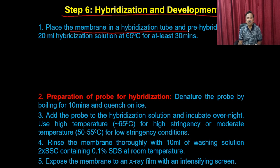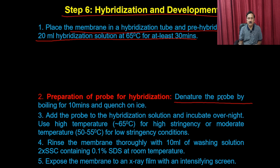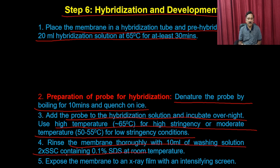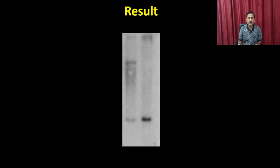Step 6 is hybridization and washing. Place the membrane in a hybridization tube and pre-hybridize in 10–20 ml hybridization solution at 65°C for at least 30 minutes. Denature the probe by boiling for 10 minutes and quench on ice. Add the probe to the hybridization solution and incubate overnight. Use high temperature for high stringency or moderate temperature for low stringency. Rinse the membrane thoroughly with 2X SSC containing 0.1% SDS at room temperature and expose to X-ray film with an intensifying screen.